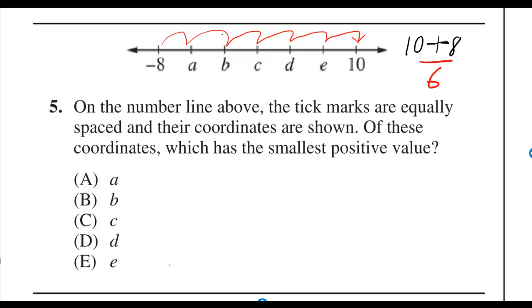But I have to move 6 tick marks to get from negative 8 to 10. So I'll take the 18 and divide it by the 6 movements needed to figure out that each movement is only 3.